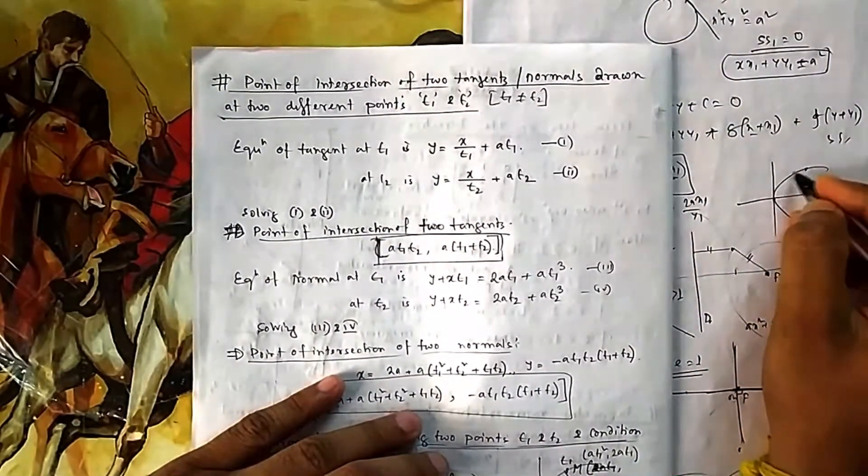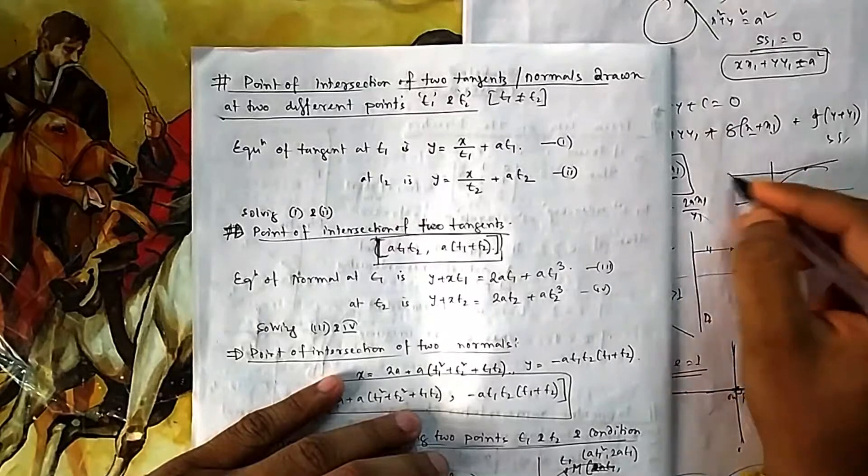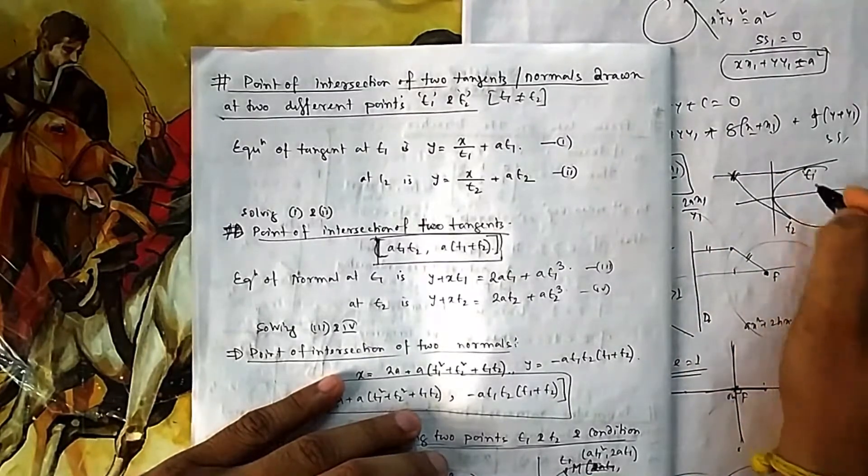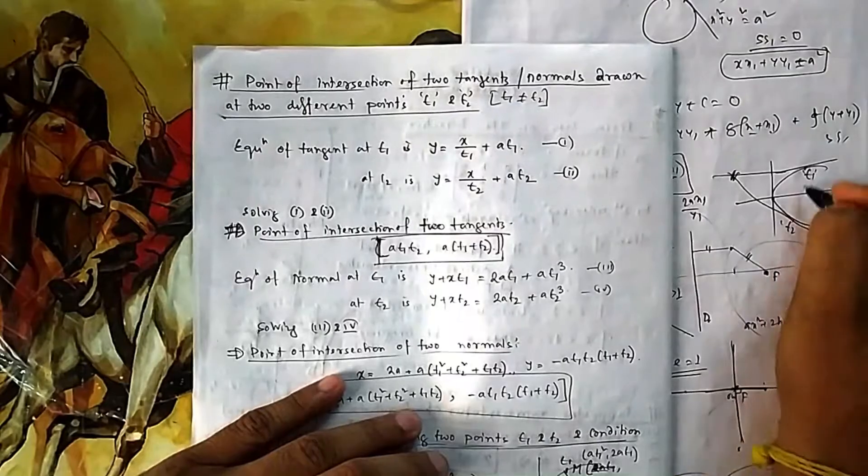Okay, you have drawn two points at t1 and one at t2. So these tangents will meet somewhere. So you want to find this point. The name of the point is t1, t2 coordinate I am not writing it.